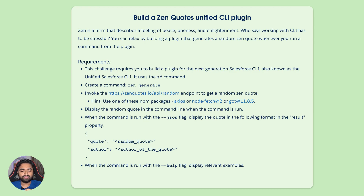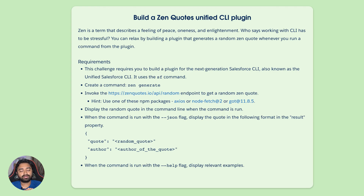The random Zen quote must be displayed in the command line when the command is run. When run with the --json flag, the output must be in JSON format with two properties: quote and author. When run with the --help flag, relevant examples must be displayed. Creating a plugin for the unified CLI is a little different from standard sfdx plugins, so there is a new developer guide.